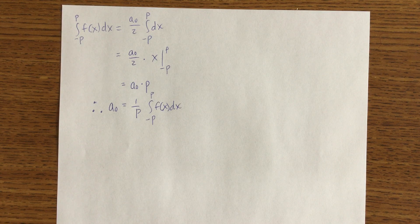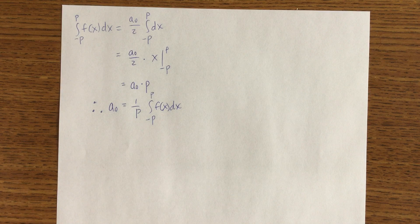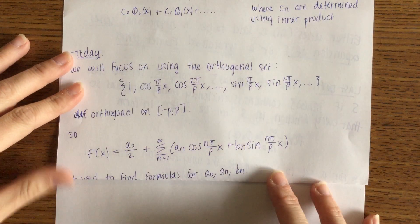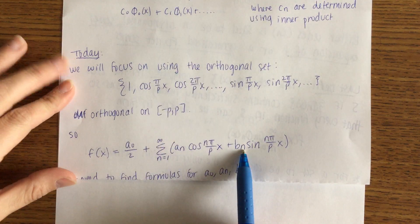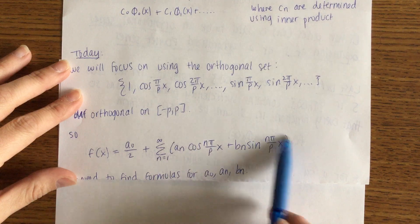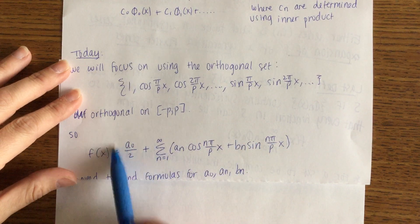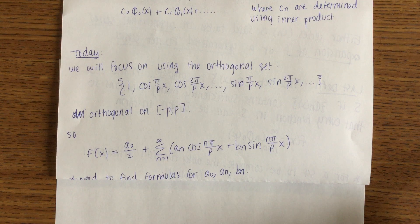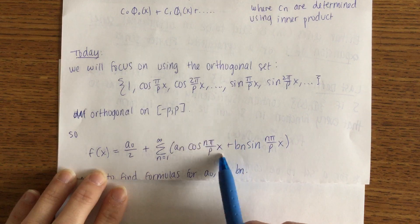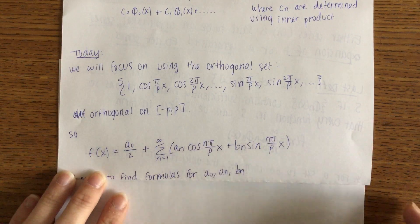Okay, with me so far? Great. Hopefully you are. We found a formula for a_0. We need to find a formula for a_n and b_n. To find a_n, I need to get rid of the other terms somehow. So I'm going to integrate, but I'm going to have to multiply by something first. Any idea what I'm going to multiply by to end up with two orthogonal functions?